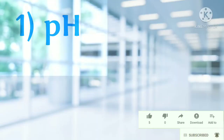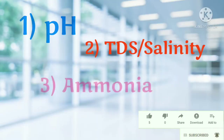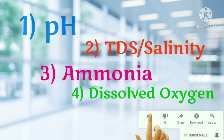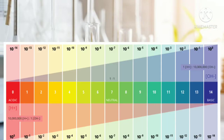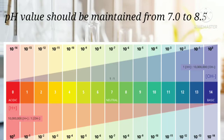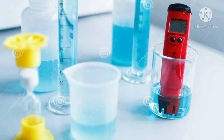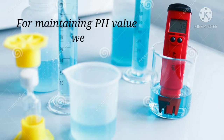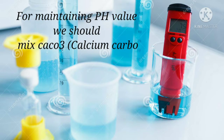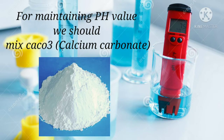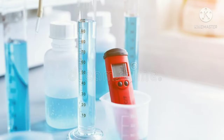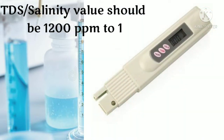First is pH value — it should be 7.5 to 8.5 in the water. For maintaining pH value, we should mix CaSO3.